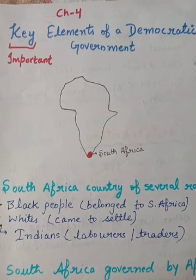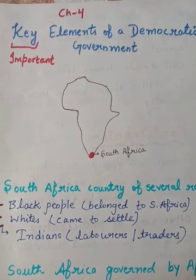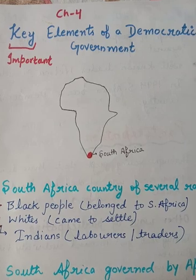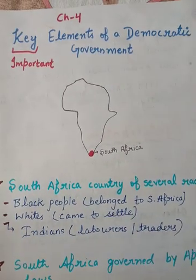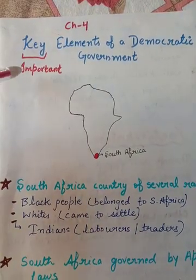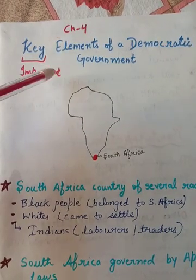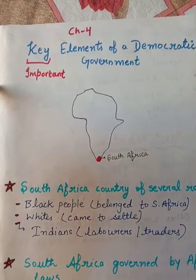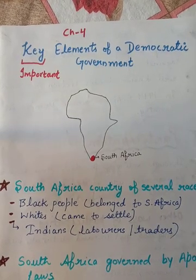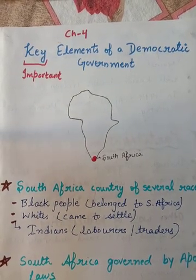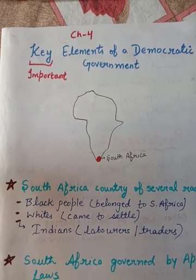Good morning students. Today we are going to start chapter number four of civics, that is the key elements of democratic government. 'Key' means important. You have read about democratic government earlier in the previous chapter.